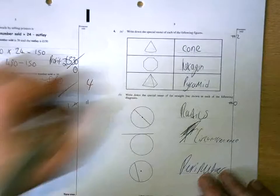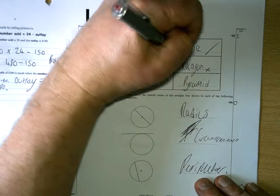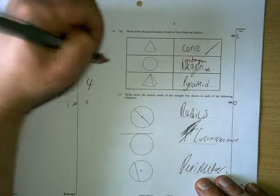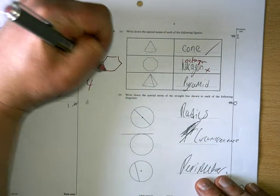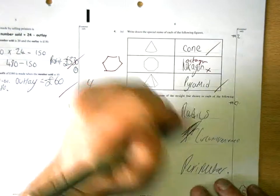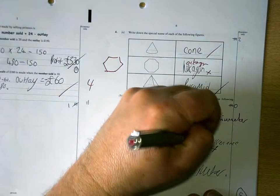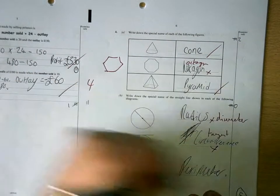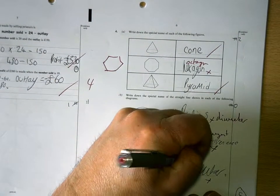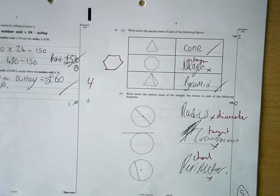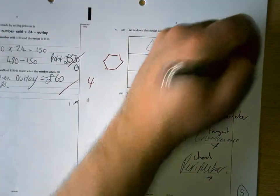Good, that's an octagon, hexagon has got 6 sides. Pyramid is right, that's the diameter, that's tangent and that's a chord. So you don't get any marks there. Six foot page.